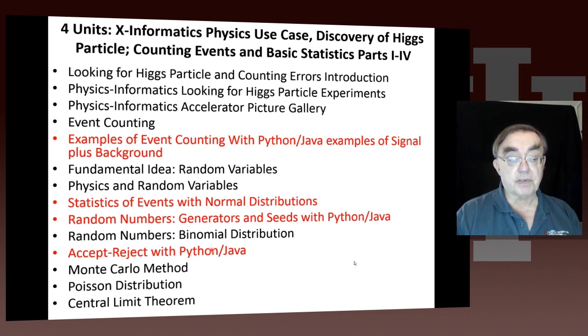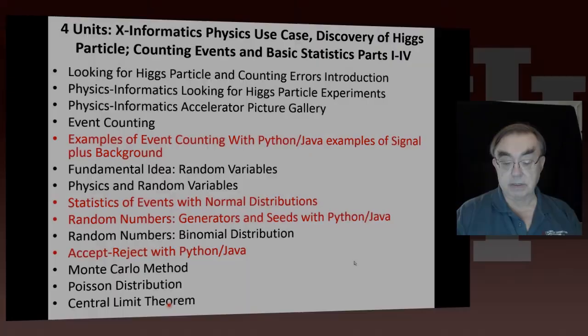We use the Monte Carlo method. Physics is notable for generating at least as much data from Monte Carlo as it does from the accelerator. You need Monte Carlo, which are simulated events, to try to understand these complex events from giant pieces of apparatus. After the binomial leads on to the Poisson distribution and then the central limit theorem. So that's those four units. They cover not only physics in this application but also fundamental simple statistics.